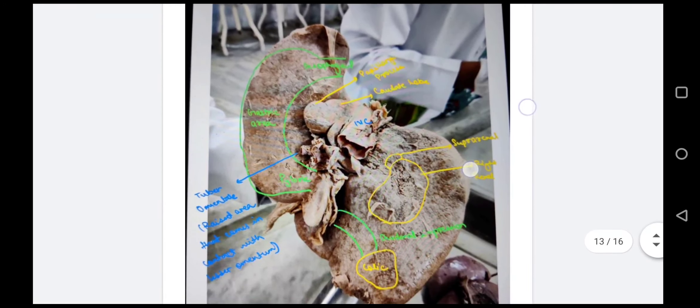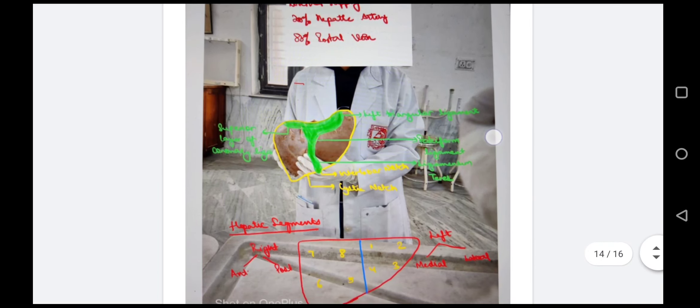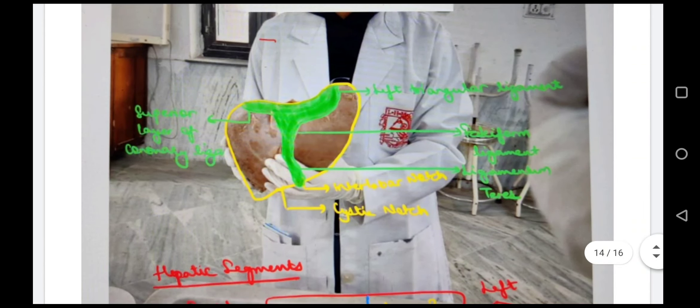Now the liver. The liver is pyramidal in shape and has five surfaces: superior, inferior, anterior, posterior, and right surface. On the anterior surface, first we see the ligamentum teres, then it becomes the falciform ligament. On the left side it forms the left triangular ligament, and on the right side it forms the superior layer of the coronary ligament.